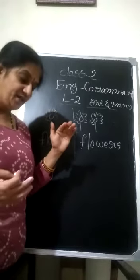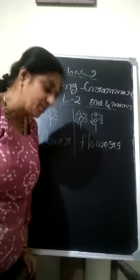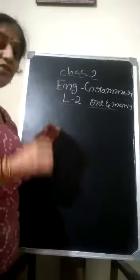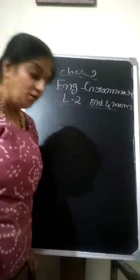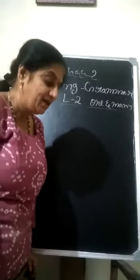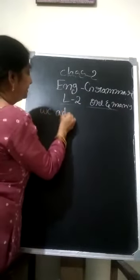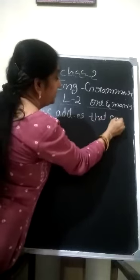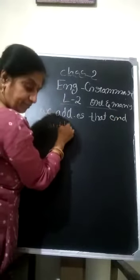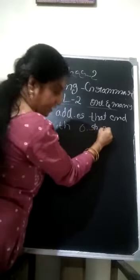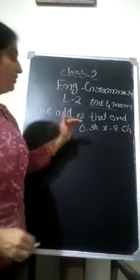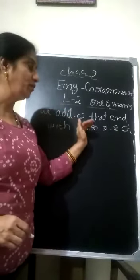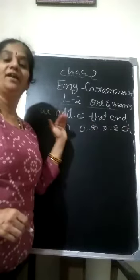Tree — trees. Bench — benches. Like that. We add ES to some nouns. We add ES to words that end with O, SH, X, S, or CH. So, which words are going to end with these letters? We are adding ES to those.